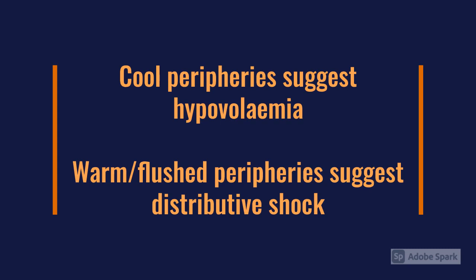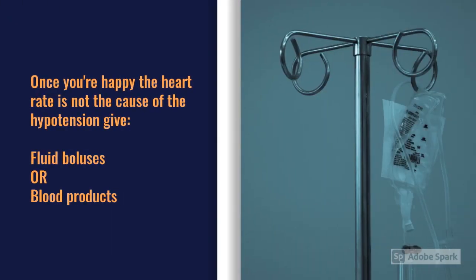Once you're satisfied the heart rate isn't the cause of the hypotension, you'll want to give fluids if appropriate, or blood products if the patient is bleeding or a potential trauma patient. That's a systematic way of going through circulation, and then you move on to the rest of the primary survey, acknowledging you'll go back and reassess the patient.